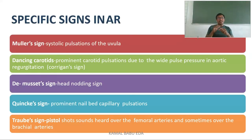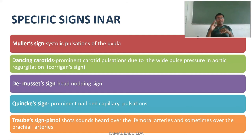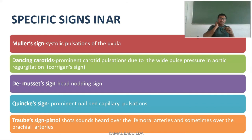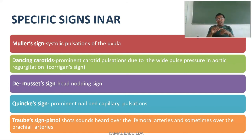Specific signs of aortic regurgitation include: Müller's sign — systolic pulsations observed near the uvula; dancing carotids — prominent carotid pulsations due to wide pulse pressure (Corrigan's sign); De Musset's sign — head nodding; Quincke's sign — nail bed capillary pulsations; and Traube's sign — a pistol-shot sound heard near the femoral or brachial arteries.